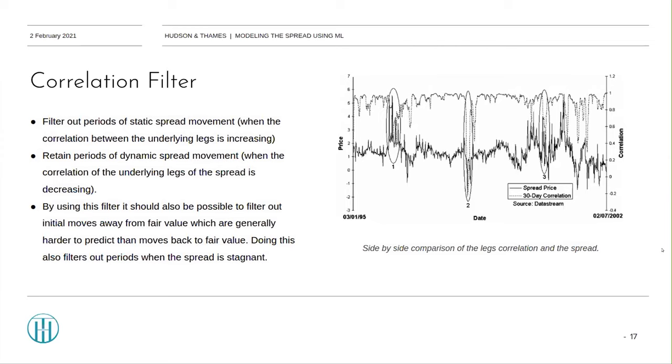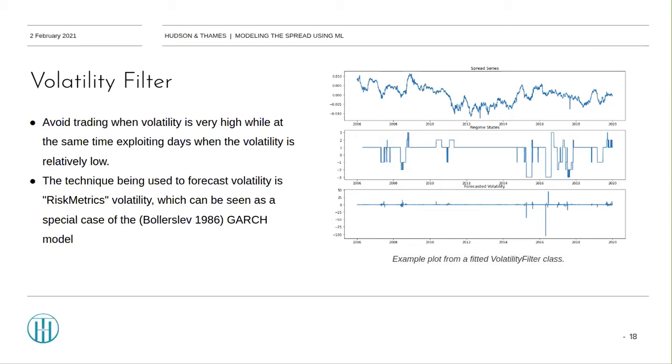Volatility filter. The intuition of this filter is to basically avoid trading when volatility is very high, while at the same time exploiting days when the volatility is relatively low. The technique being used here to forecast volatility is called risk metrics, which can be seen as a special case of the Bollerslev GARCH model with predetermined decay parameters. The estimation of volatility regimes is based on a rolling historical average of risk metrics volatility, as well as the standard deviation of this volatility. After the specification of the volatility regimes is done, leverage ratios are set based on the above principle. High leverage in low volatility states, low to no leverage in high volatility states.